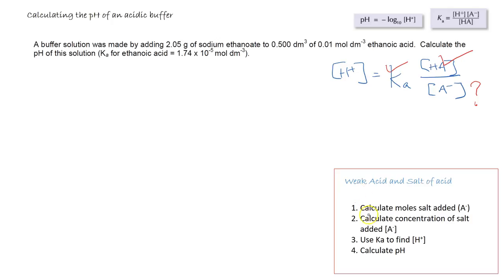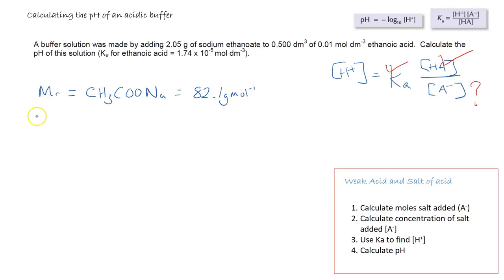In this question we follow our steps to calculate the moles of the salt added. We are given 2.05 grams of sodium ethanoate. The first thing to do is to work out the Mr of sodium ethanoate — we have to include the value for the sodium ion here. The total Mr for sodium ethanoate is 82.1 g mol⁻¹. From here we can work out the moles of sodium ethanoate: mass divided by Mr, so 2.05 ÷ 82.1 = 0.0250 mol.